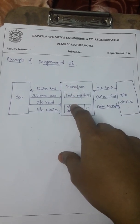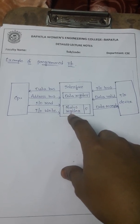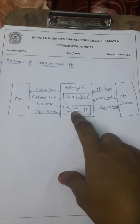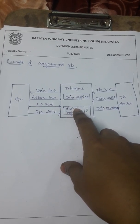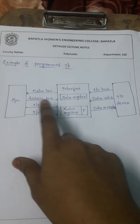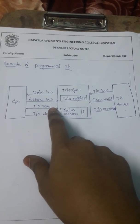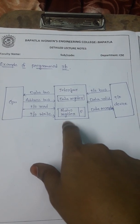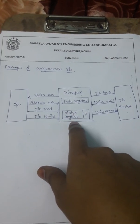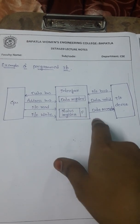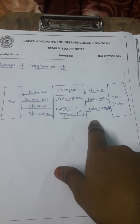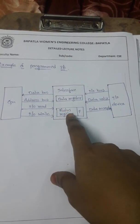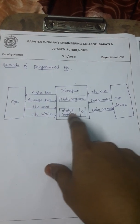In the program, we write code to check the status register. When the status register flag bit is 1, it means valid data is available in the data register, and the CPU accesses the data from the data register. The CPU accepts the data and clears the status register value to 0. Upon clearing the status register, the data accepted line is disabled. When the data accepted line is disabled, the device can transfer the next byte of data to the interface.